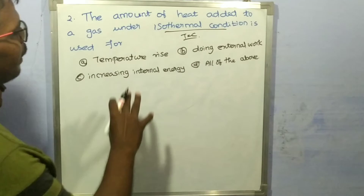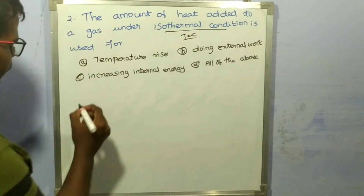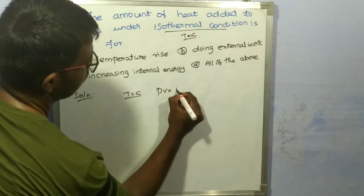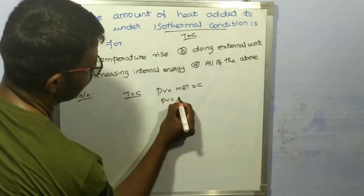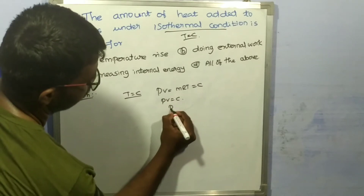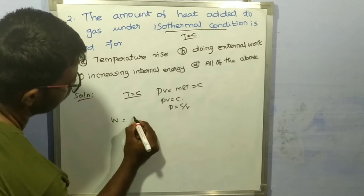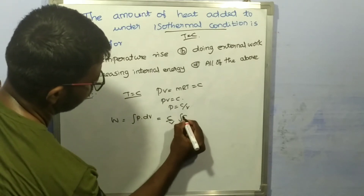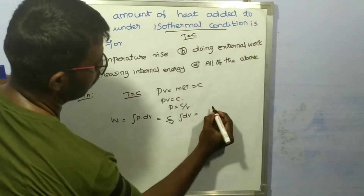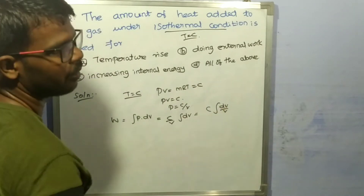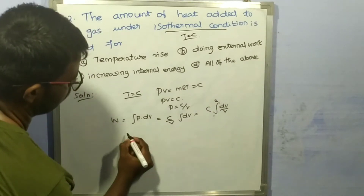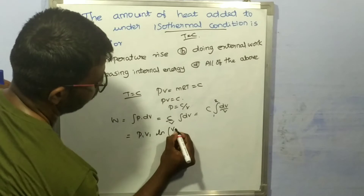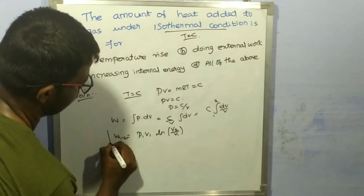Since temperature T is constant, PV = mRT = constant, so PV = constant. Since P = C/V, the work done is the integral of P dV = integral of (C/V) dV = C × ln(V2/V1). Since C = P1V1, work done = P1V1 × ln(V2/V1). This is the work done for an isothermal process.